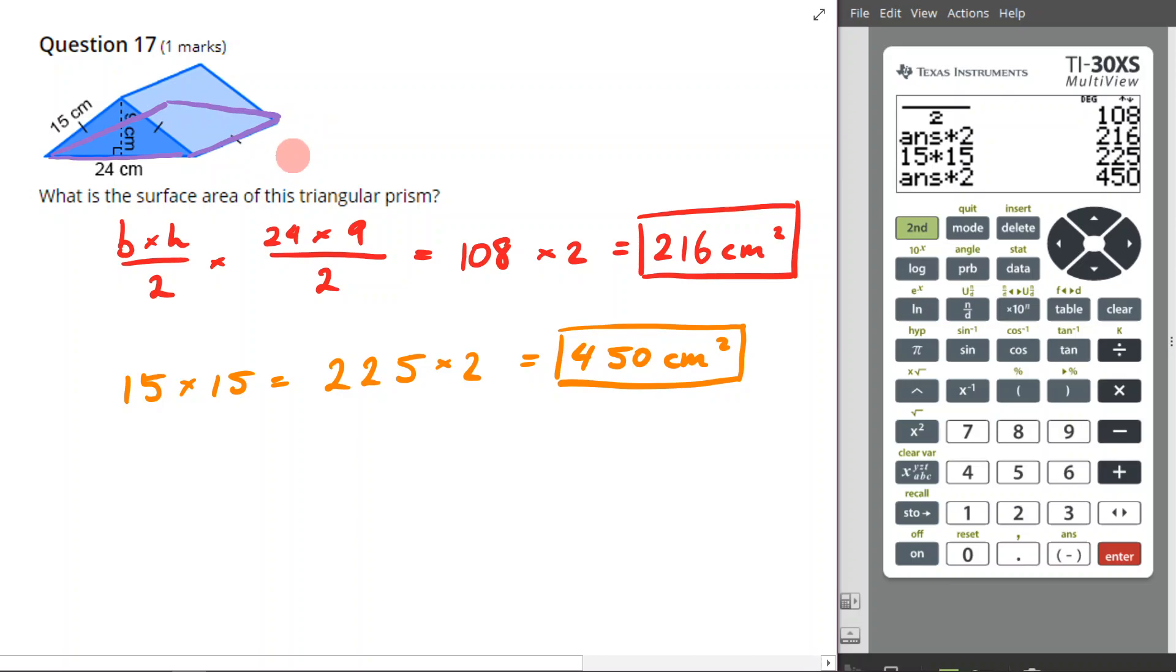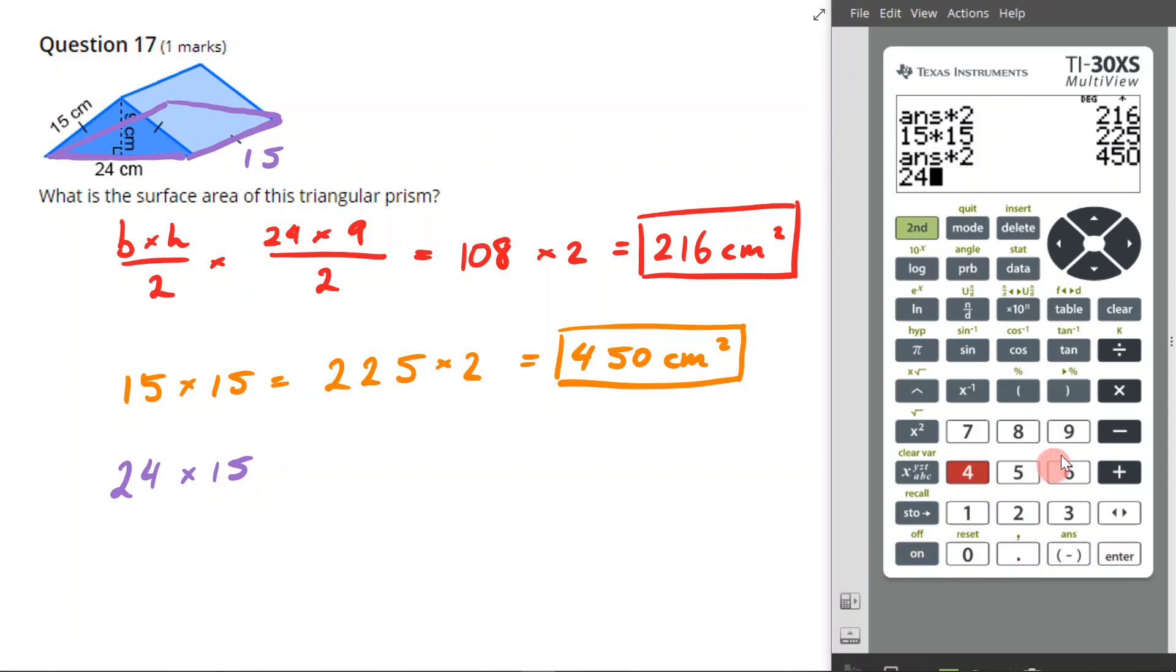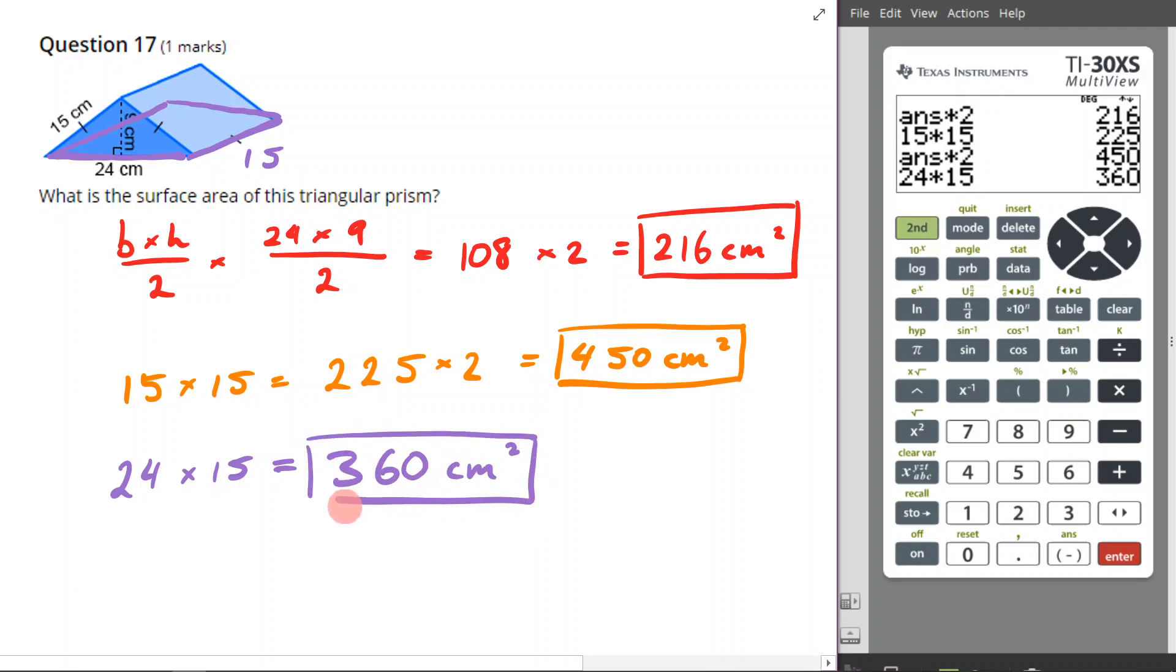Now, how are we going to do that? Well, we're just going to times together the sides. This side is 24 and this side we know is 15. So I'm just going to go 24 times 15. Come to my calculator. 24 times 15 is 360. 360 centimeters squared. And that's it.